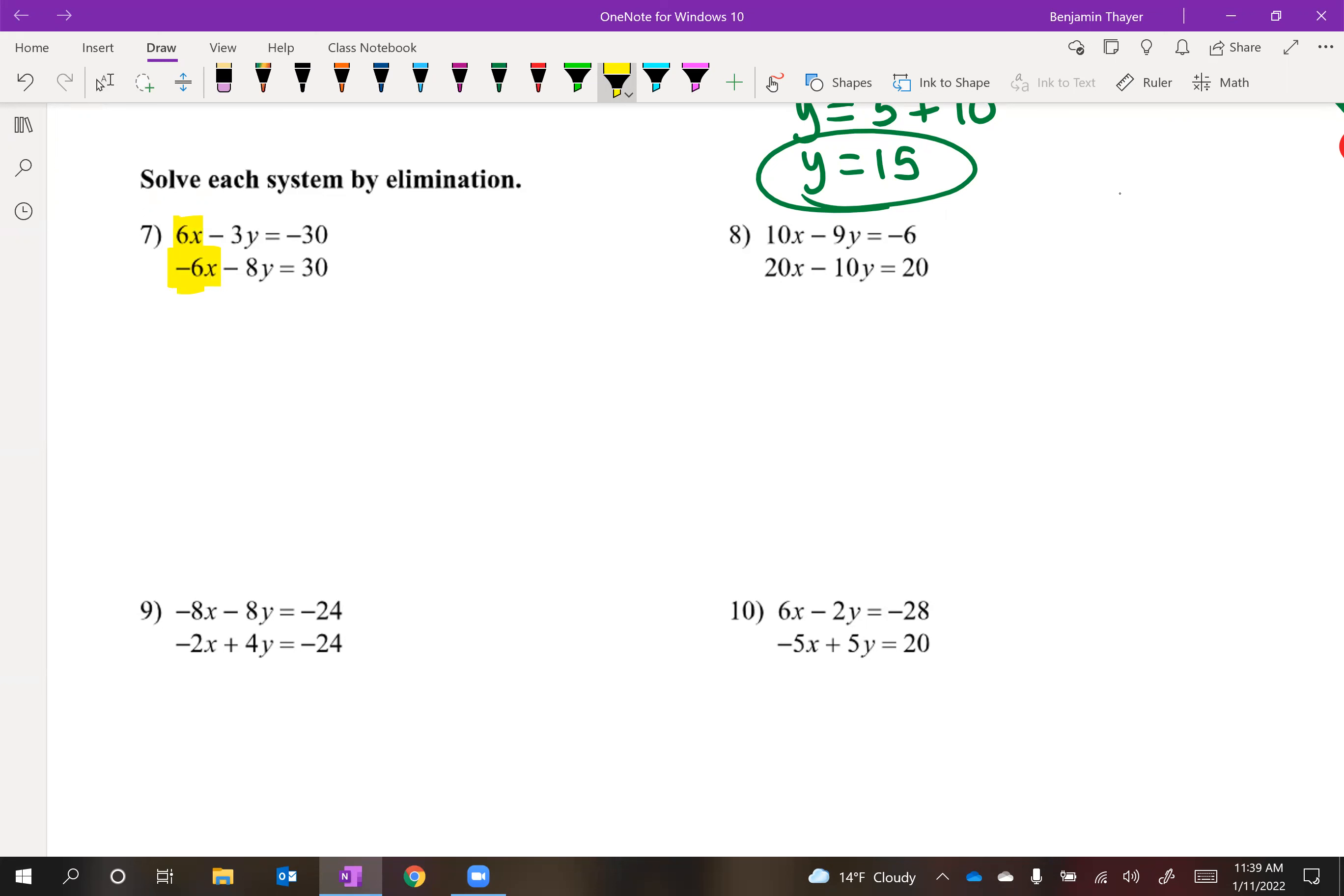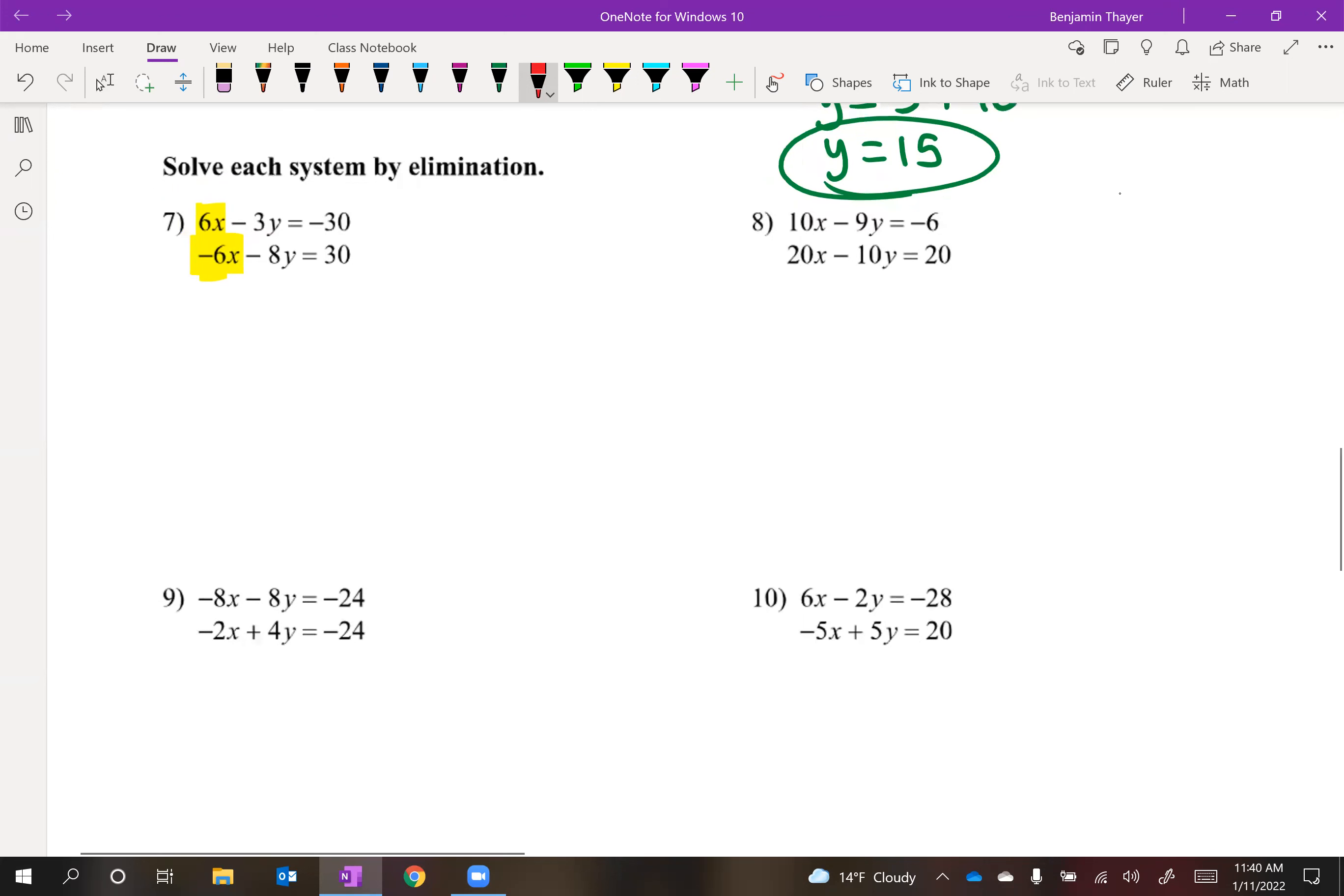Jump over to number eight. Do you have opposites there? No, but you're pretty close. If you wanted to eliminate the x variables, what would you want them to meet up at? We'll do a little clue here for number eight. What if they met up at 20? I would want that top one to be negative 20. So times negative two.